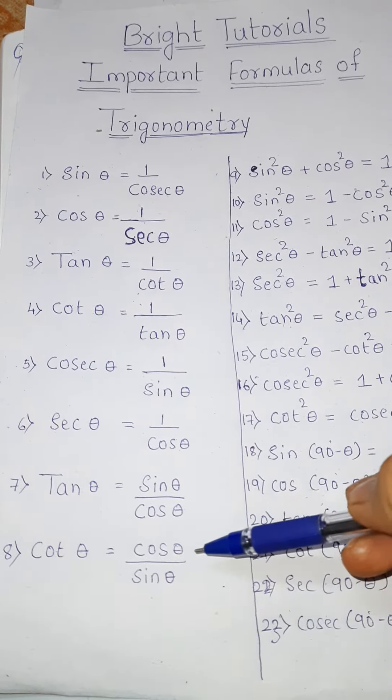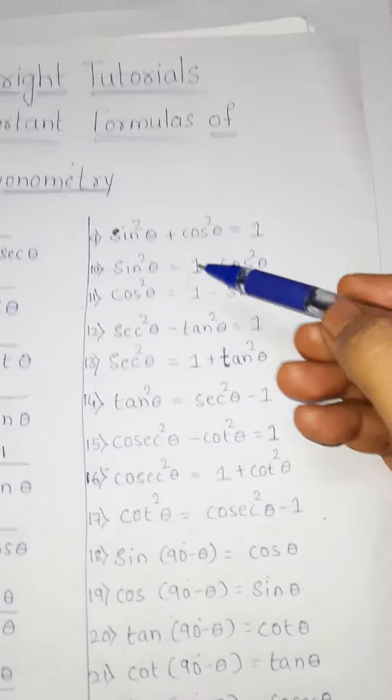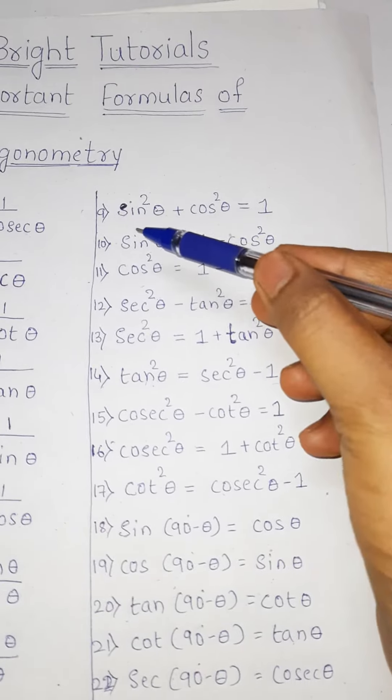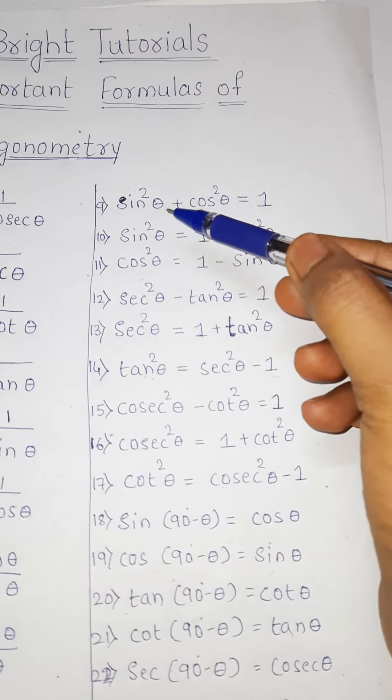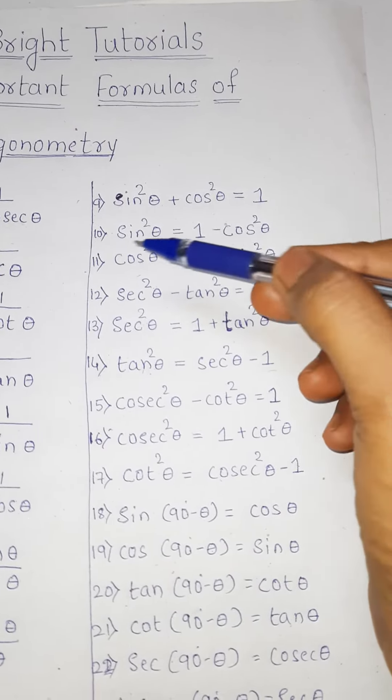Eighth one: cot theta is equal to cos theta by sine theta. Ninth one: sine square theta plus cos square theta is equal to 1.